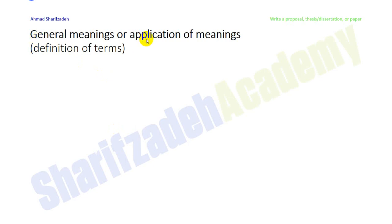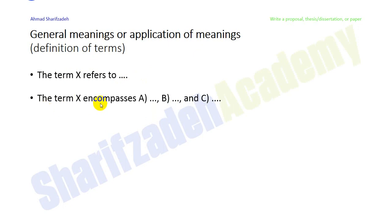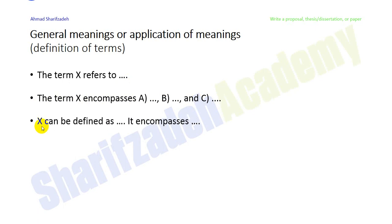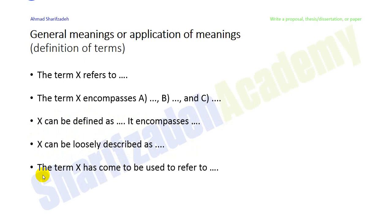If you want to tell readers about general meanings or applications, you can use clichés like: 'The term X refers to...' — defining the word by your own or someone else's definition. Or: 'The term X encompasses A, B, and C' — listing features or subcategories. Also: 'X can be defined as...' or 'X can be loosely described as...' or 'The term X has come to be used to refer to...'